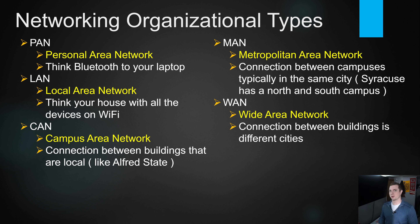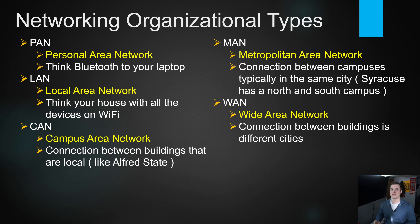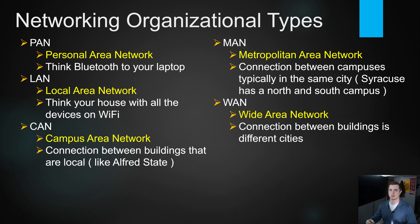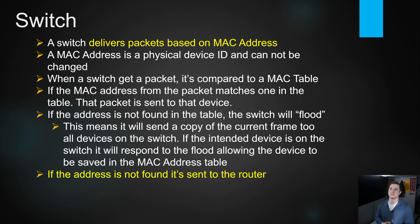MAN — metropolitan area network — is typically between buildings within your city, but it's still a private network. We typically use a VPN to connect these, creating an encrypted tunnel so we can communicate securely between buildings even though that traffic still goes over the internet. It's still technically considered a private network.